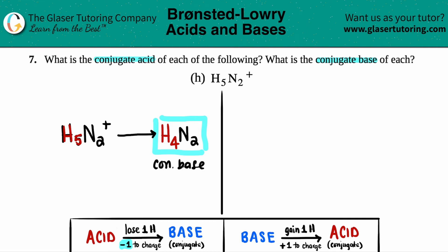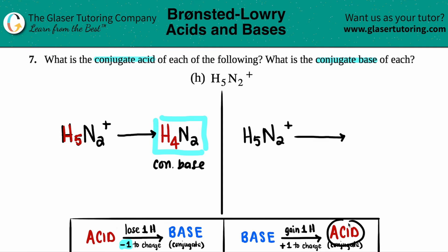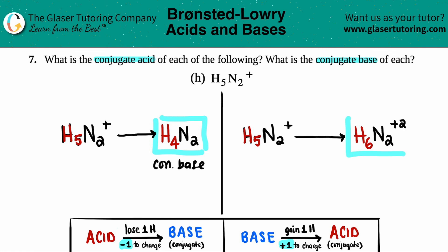Now we do the same thing and treat it as if this was a base — what's the conjugate acid? We had H5N2+. On the flip side, if you're starting as a base and want to get to the conjugate acid, acids always have one more hydrogen, so you gain one hydrogen. You had H5, so bump it up to H6. All the other elements come along: N2. Now fix the charge — when you're adding a hydrogen you plus one to your overall charge. It was originally plus one, so one plus one is plus two. And that is the conjugate acid.